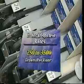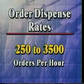Dispensing occurs when the dispenser's microprocessor receives picking instructions from the SI System Manager module. Orders can be dispensed at rates between 250 and 3,500 orders per hour. The Dispens-O-Matic order collection module is merely a belt conveyor that runs through the center of the entire machine.